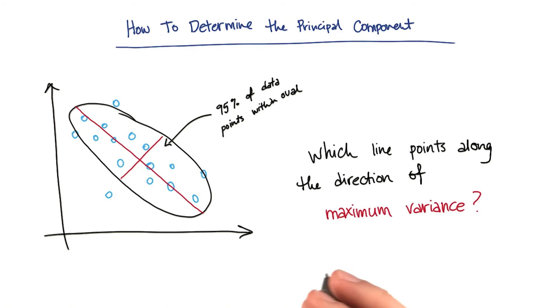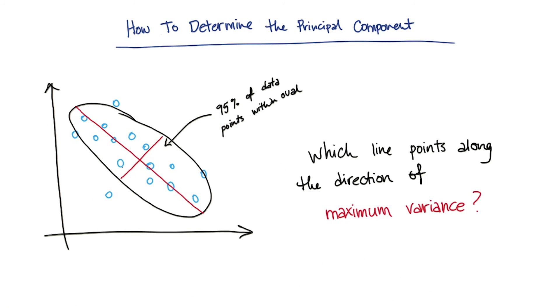Now here's the critical question. Which of these two lines points along the direction of the maximum variance of the data? In other words, in which direction is the data more spread out? Check the box that you think has the right answer.